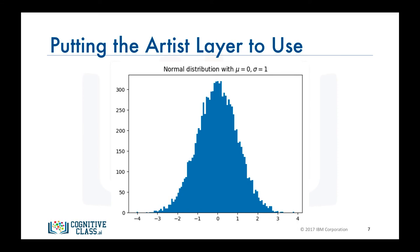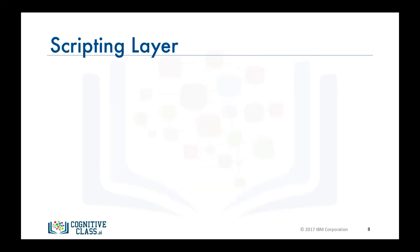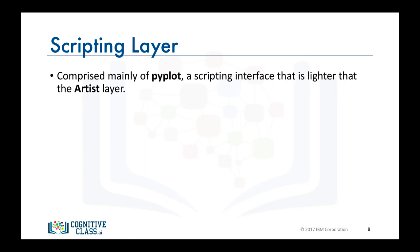This is the generated histogram, and so this is how we use the artist layer to generate a graphic. As for the scripting layer, it was developed for scientists who are not professional programmers. Based on the histogram we just created, you can see that the artist layer is syntactically heavy, as it is meant for developers and not for individuals whose goal is to perform quick exploratory analysis of data. Matplotlib's scripting layer is essentially the matplotlib.pyplot interface, which automates the process of defining a canvas and defining a figure artist instance and connecting them.